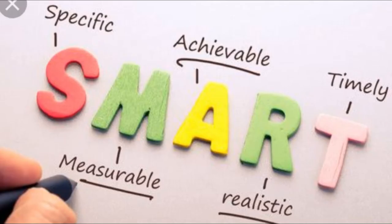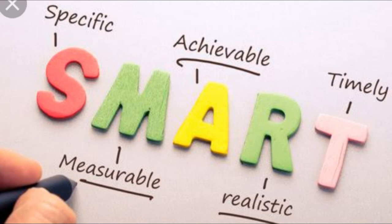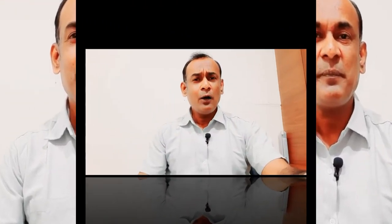Let's define each letter. S stands for Specific — make your goals specific and narrowed for more effective planning. M denotes Measurable — define what evidence will prove you're making progress and reevaluate when necessary. A stands for Attainable — make sure you can reasonably accomplish your goal within a certain time frame. R stands for Relevant — your goals should align with your values and long-term objectives. T is Time-bound — set a realistic, ambitious end date for task prioritization and motivation.